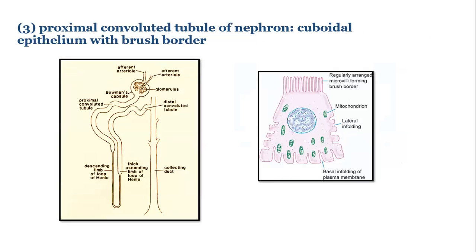Cuboidal epithelium with brush border is a specialized epithelium which has a layer of microvilli that project at the free surface of the epithelium, as shown in the diagram. These are specialized for absorption. The proximal convoluted tubule is the longest part of the nephron, and absorption of materials like glucose, amino acids, etc. takes place here. So we find cuboidal epithelium with brush border here.